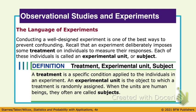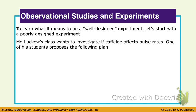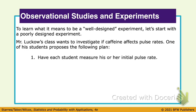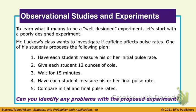Do you know what a control group is? A control group is the ones that stay the same — they keep doing what they've always done so we can compare to them. Here's an experiment: Mr. Luckow's class wants to investigate if caffeine affects pulse rate. A student proposes: every student measures their pulse rate, we give every student 12 ounces of cola, wait 15 minutes, then measure pulse rate again and compare initial and final. What is wrong with this experiment? There's no control group.